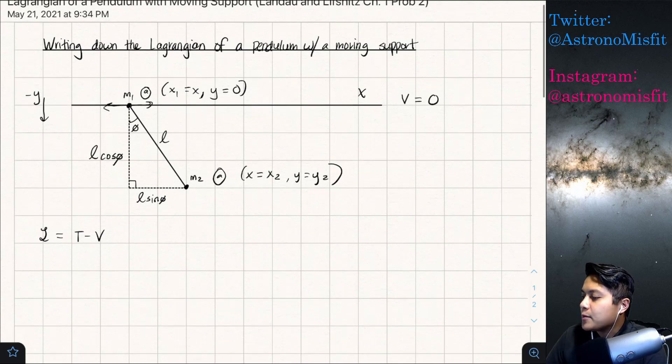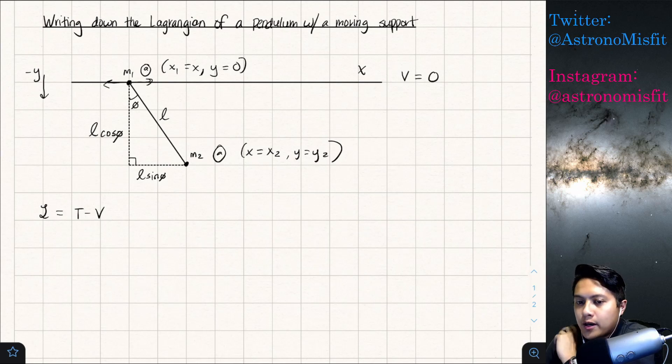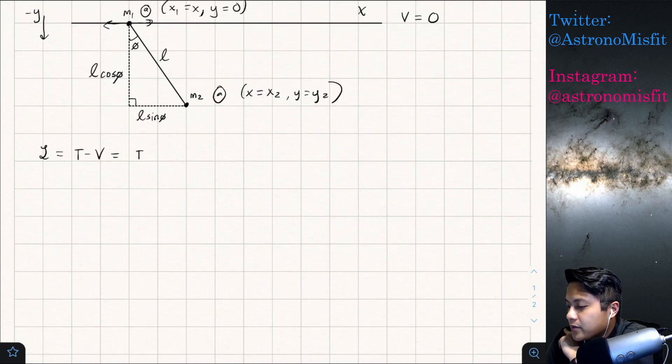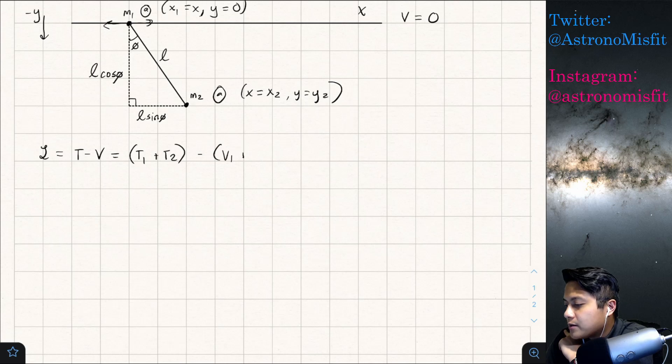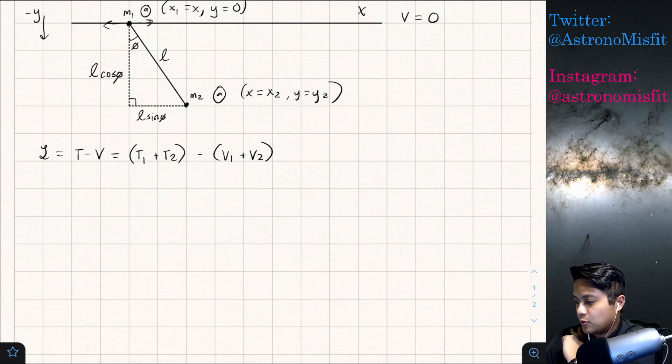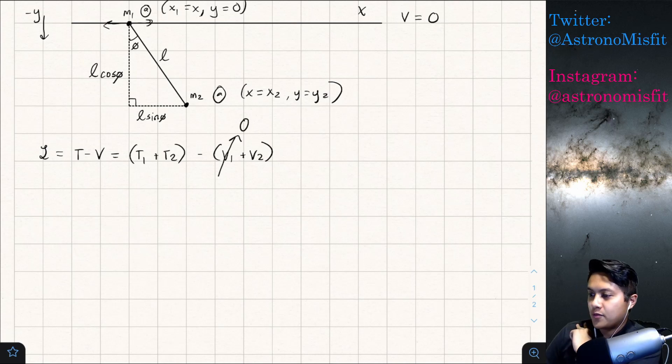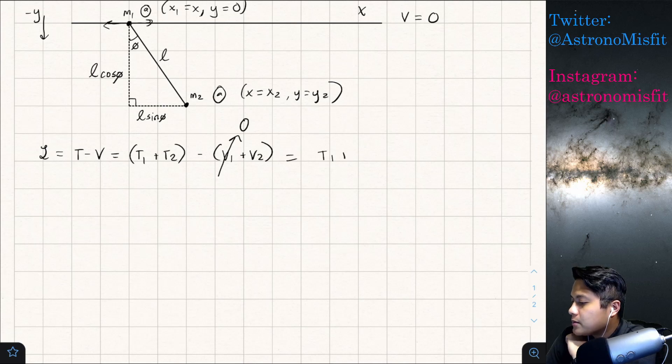And now what we need to do is I'm going to write down the Lagrangian in a little bit more of a specific way. So T minus V can be expanded as T1 plus T2 because we have two point masses here and we can subtract V1 plus V2 because again we have two point masses here. So this represents the kinetic energy of mass 1, the kinetic energy of mass 2, and then the potential energy of mass 1 and 2 respectively. Now one thing we can do automatically is that we can actually do some simplification here because we can see that mass 1 is on my potential energy zero point line, it's at V equals zero, and because of that case we can just set V1 to be zero from the get-go. And so this is going to be equal to T1 plus T2 minus V2.